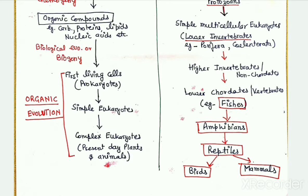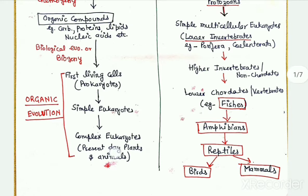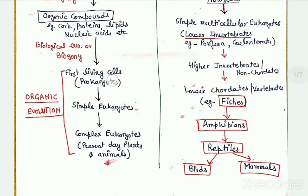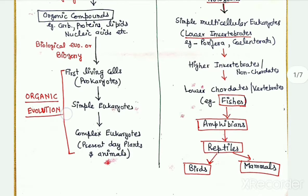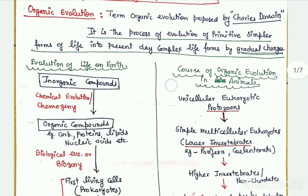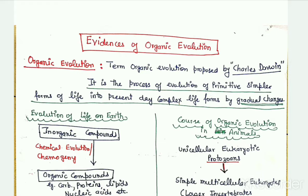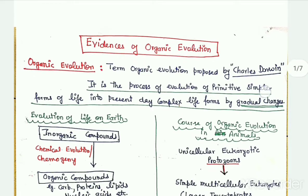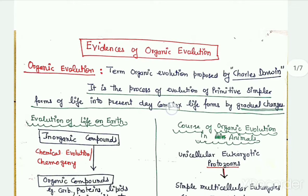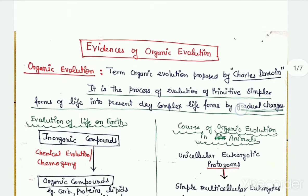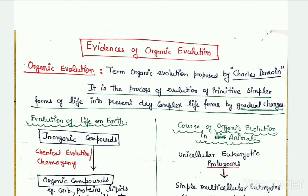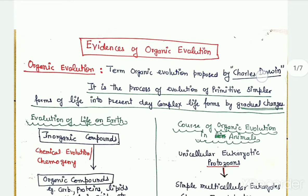The process of formation of complex organisms from simpler organisms is termed as organic evolution. Organic evolution is the process of evolution of primitive simpler forms of life into present day complex life forms by gradual changes. This term organic evolution was for the first time used by Charles Darwin.